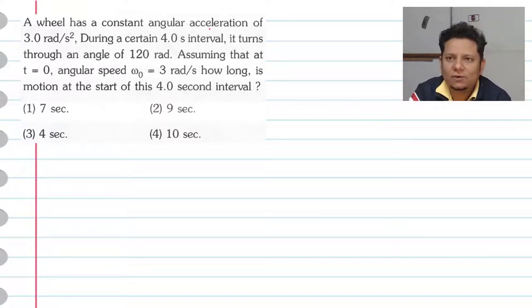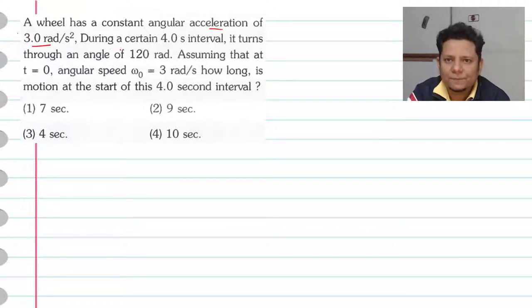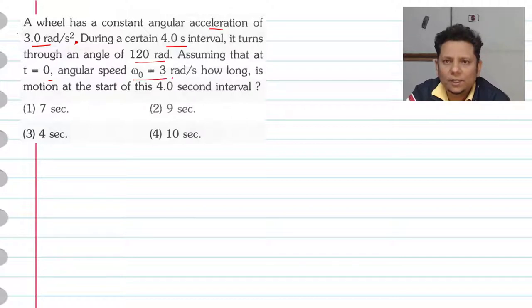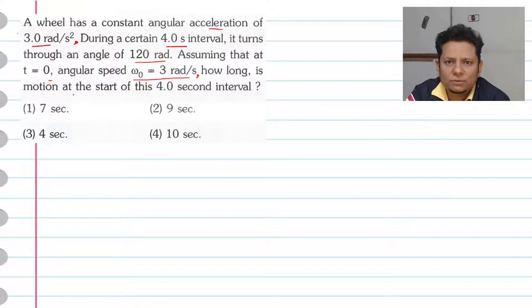Question says: a wheel has a constant angular acceleration alpha of 3 radian per second square. During a certain 4 second interval, it turns to an angle of 120 radian. Assuming that at t is equal to 0, angular speed omega naught is 3 radian per second. How long is the motion at the start of this 4 second interval?